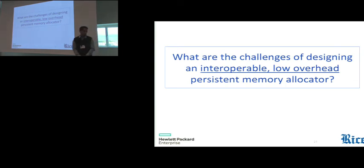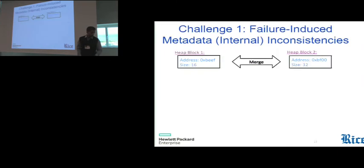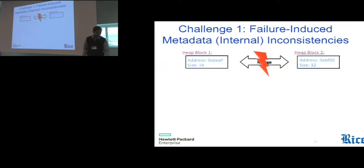Now I will move on to some of the challenges in designing interoperable, standalone interoperable allocator with low overhead for persistent memory. So one of the first challenges, as we can imagine, is keeping the internal metadata of an allocator consistent when a failure occurs. So here's an example of two heap blocks being merged to form a larger contiguous block. Right now the two heap blocks are being tracked by two set of metadata, so merge involves multiple persistent writes, as we can imagine. And imagine that in the middle of the merge, after which we would only need one set of metadata to track one contiguous block, a failure occurs.